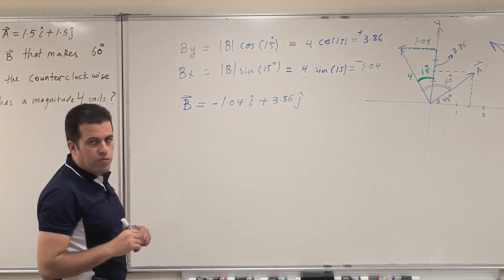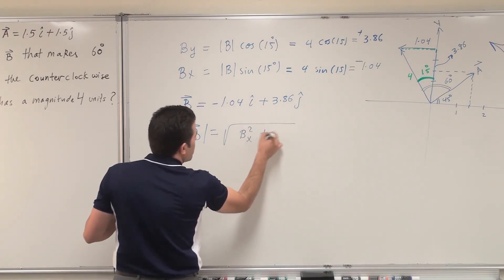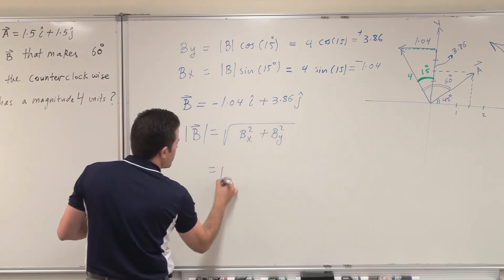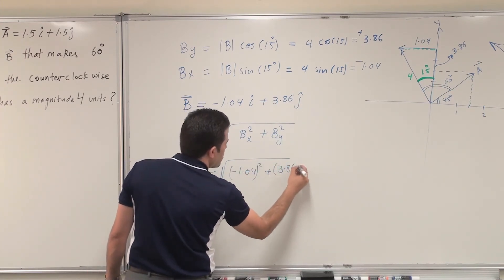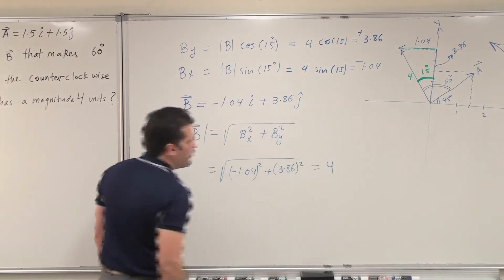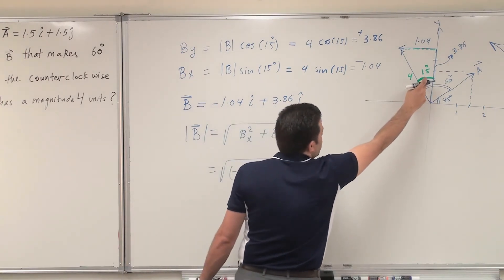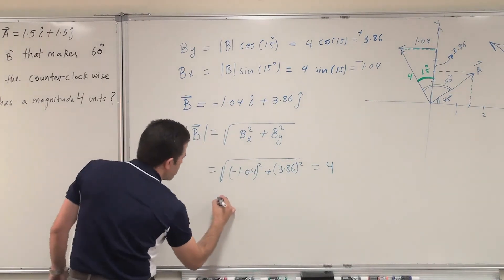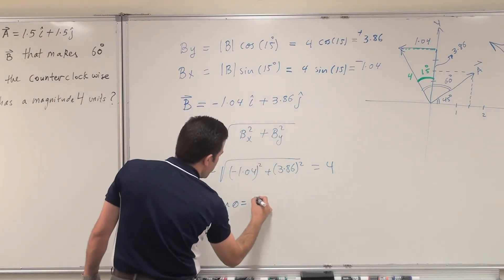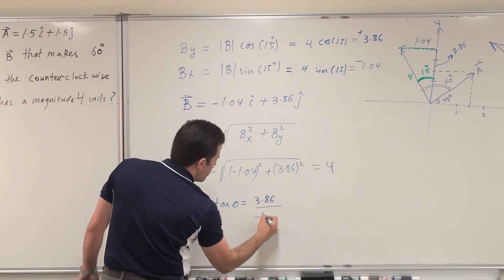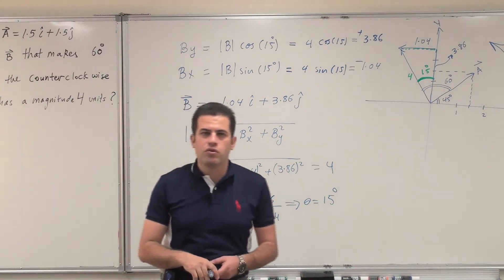To confirm, I can find the magnitude of B again: the square root of (minus 1.04) squared plus (3.86) squared, which equals 4, confirming the magnitude is correct. I can also verify the angle: tan theta equals the y component 3.86 divided by the x component, which gives theta equals 15 degrees. This concludes the answer. Thank you.